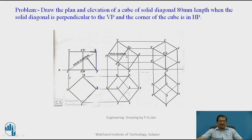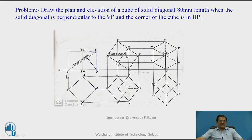The solid diagonal, as mentioned, is the diagonal joining corners that are diagonally opposite on different faces. Point 1 is on the base and point 3 is on the top face — joining 1 to 3 gives the solid diagonal. So I have joined the solid diagonal as 1-3 and completed the front view. Of course, 1-3 will be a thin construction line.